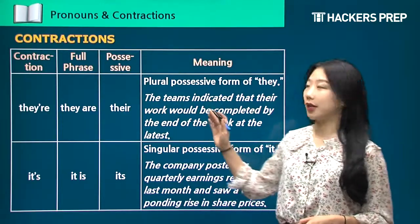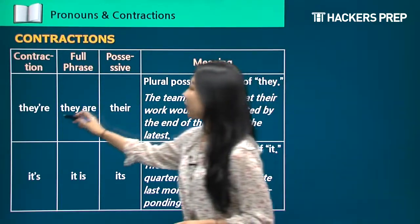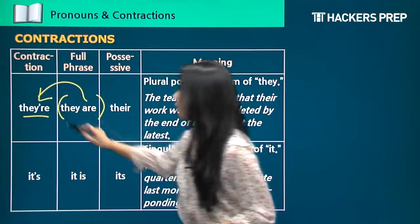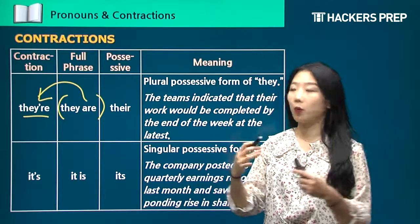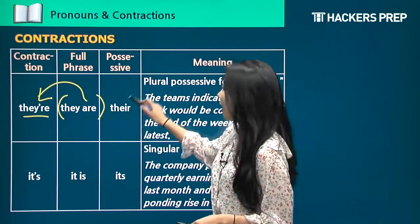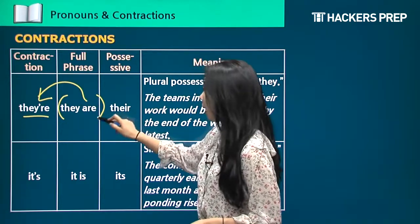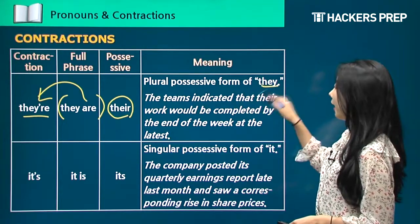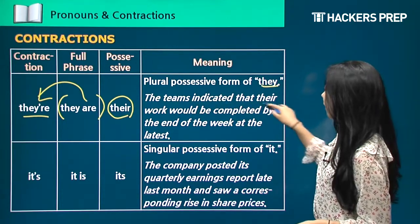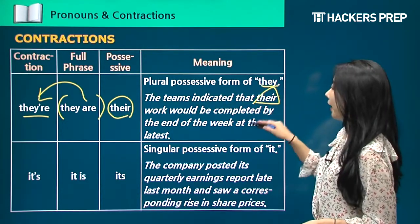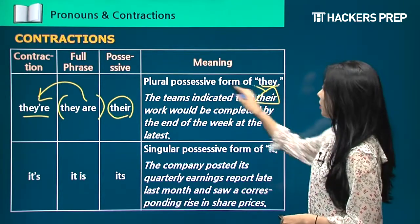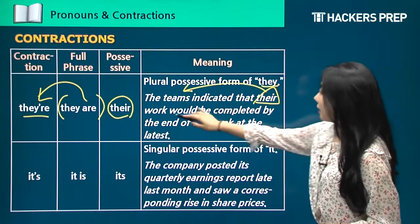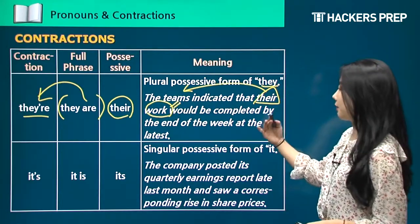Let's look at this chart together about contractions. The contraction 'they're' comes from the full phrase 'they are,' shortened with an apostrophe. The possessive form of 'they' is 'their.' For example: 'The teams indicated that their work would be completed by the end of the week at the latest.' 'Their' refers to the teams — it's plural and possessive, because the work belongs to the teams.